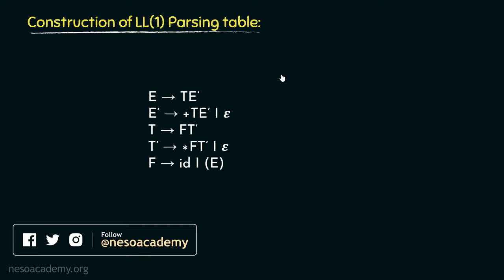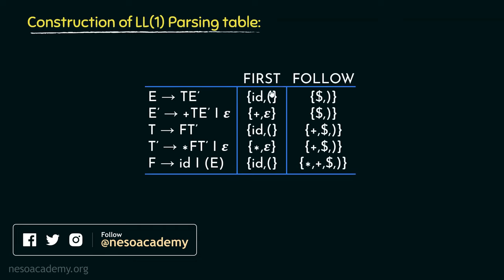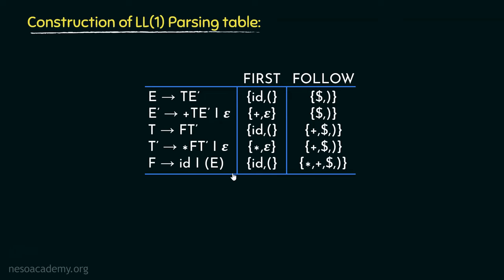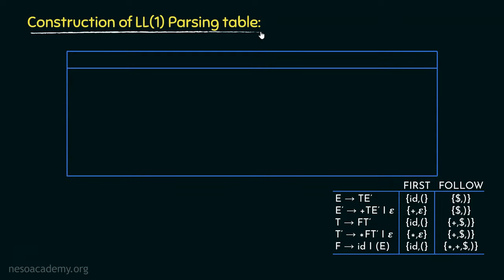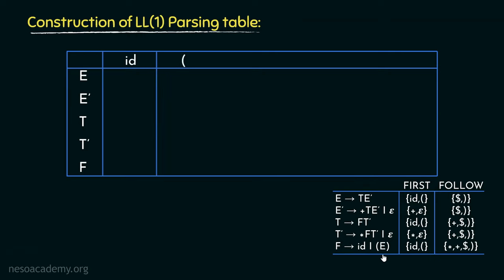Now let's dive into the construction of the LL1 Parsing Table. We are going to take this grammar — which you should remember from the session on first and follow — where we derived the firsts and follows of all non-terminals one by one. The LL1 Parsing Table has rows and columns: all non-terminals in the grammar are enlisted as rows, and the columns are dedicated to terminal symbols. The terminal symbols in this grammar are: ID, open parenthesis, close parenthesis, asterisk, addition symbol, and the dollar symbol.